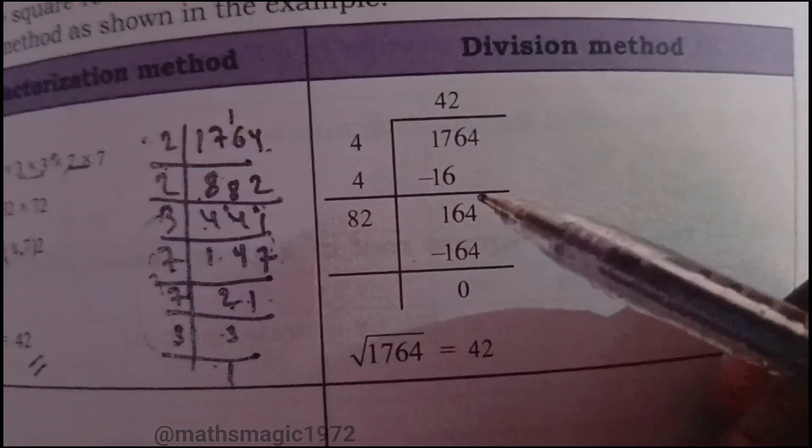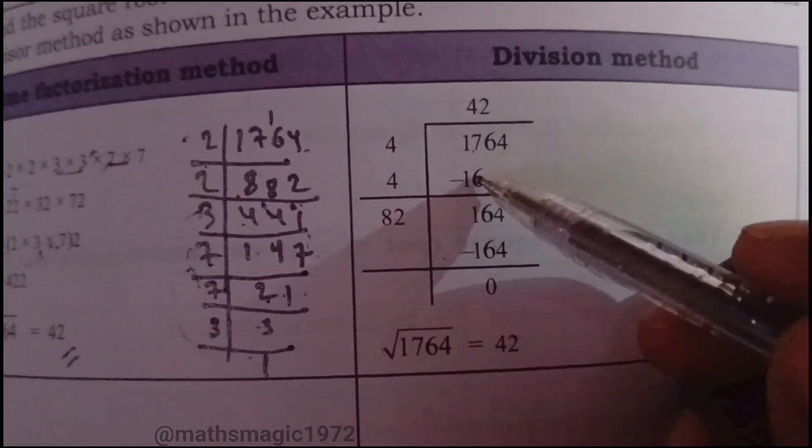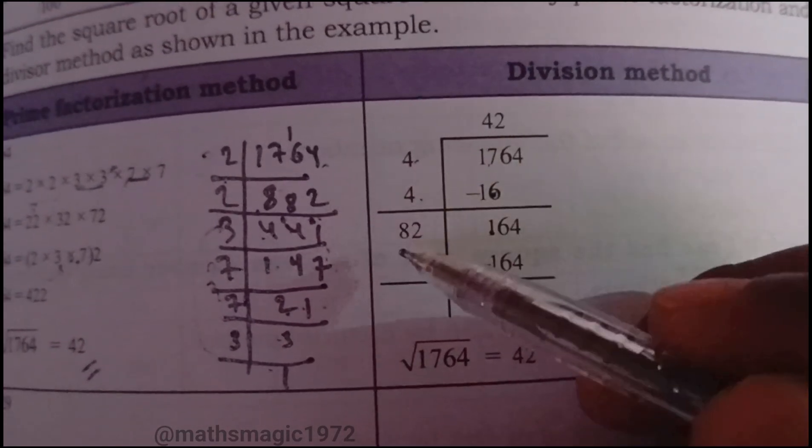By division method, take pairs from right. 4 squared is 16, so 4 into 17 gives 16. Subtract: 17 minus 16 is 1. Bring down 64 to get 164.